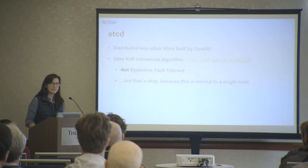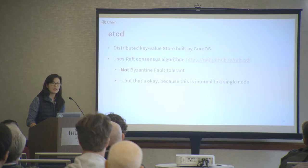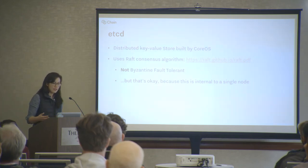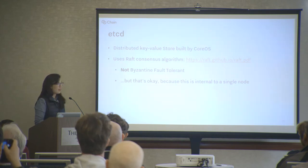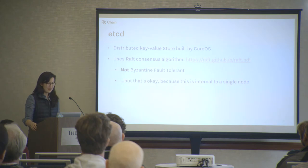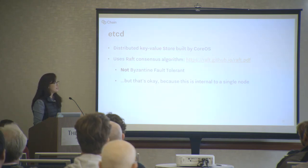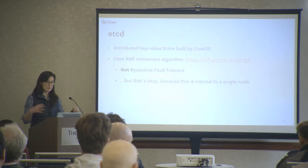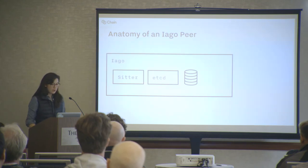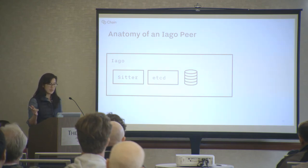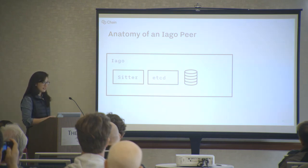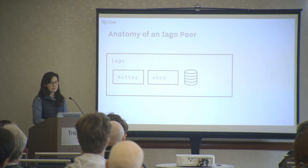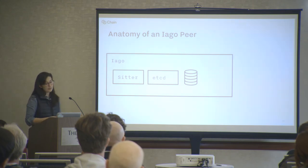If you're not familiar with etcd, it's a distributed key-value store that uses Raft as its consensus algorithm. Raft is supposed to be a more understandable version of Paxos. It isn't Byzantine fault tolerant — that is, it's not resistant to malicious attacks that come from inside the network. And of course this would be a big problem in a Bitcoin network where anyone can add a node. But in this particular case, Raft is totally safe because it's just being used inside of a single node inside of a permissioned blockchain. Each Iago peer contains three things: it runs a Postgres process, an etcd process, and what we call the sitter daemon — which owns the Postgres process and is responsible for knowing what this peer's role is and for promoting this peer if necessary, from async to sync, or sync to primary.